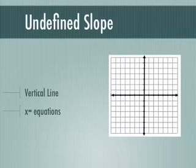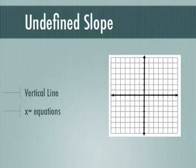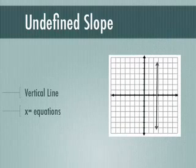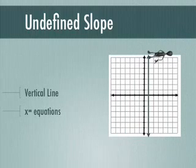An undefined slope is not really a slope — it's a vertical line. It's an x-equals equation. This does not tilt; it just falls. Vertical line — undefined.